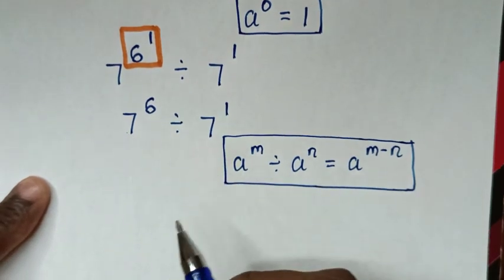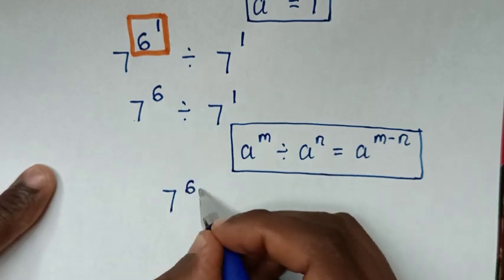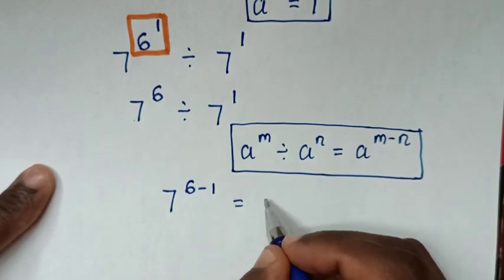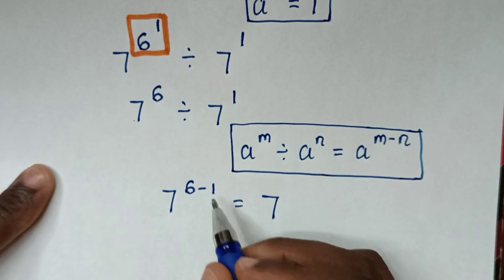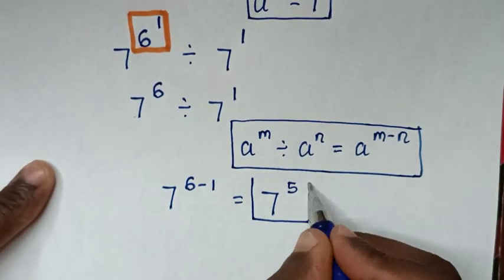So in here it will be same base of 7^(6-1), which equals 7^5. Therefore, this is our final answer.